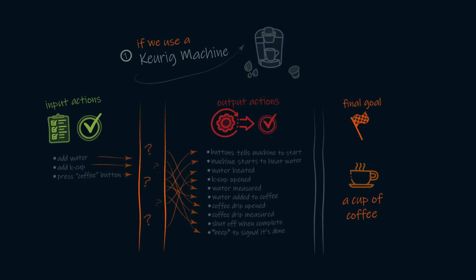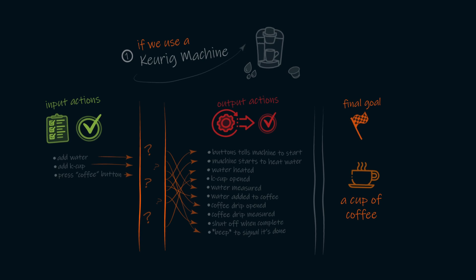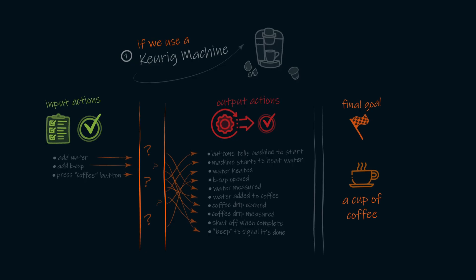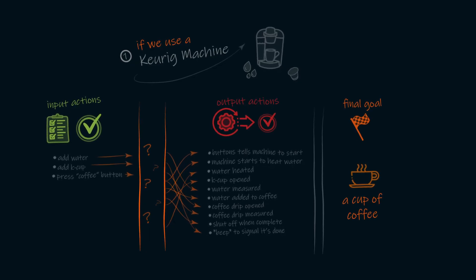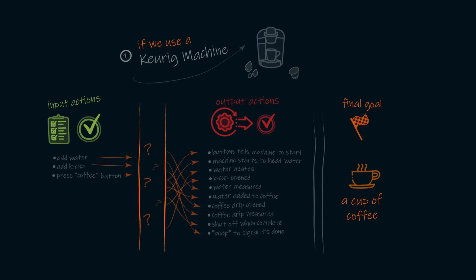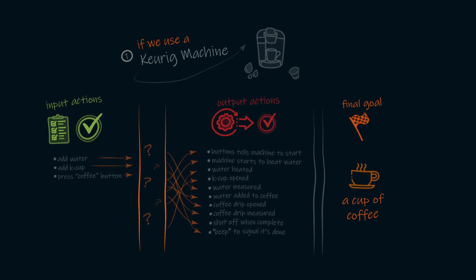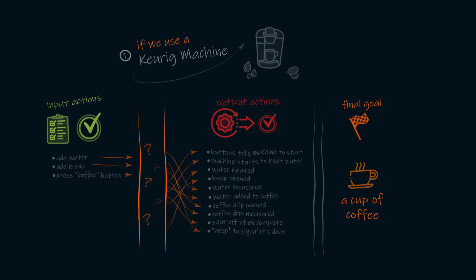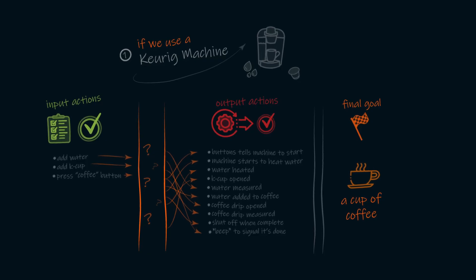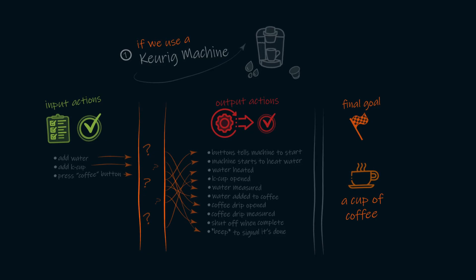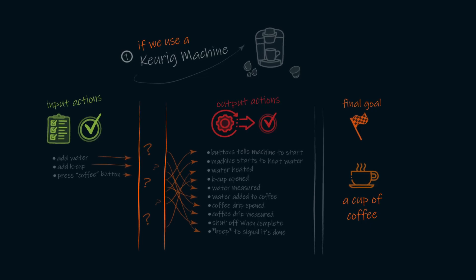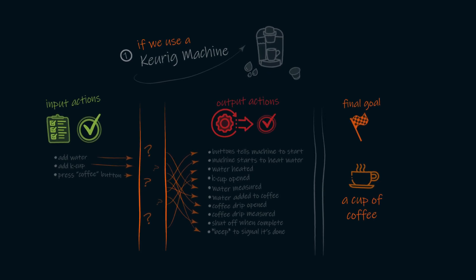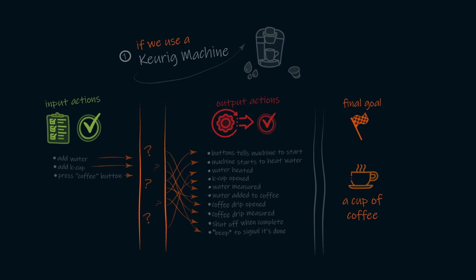These three steps would be the only input we need in order for this action to be completed. And then the Keurig machine would perform the rest of the instructions for us. In this case, the input actions have been simplified for us to have it be fewer steps that we need to take. And then the Keurig machine translates those few actions into the many actions needed to actually make the cup of coffee. So the button we pressed would tell the machine to power on, measure the water, heat the water, start to drip the coffee, measure the water as the coffee is being made, and then shut off the machine once we have a full cup of coffee. And then after all the output actions had been completed, we'd reach our final goal of having a cup of coffee.